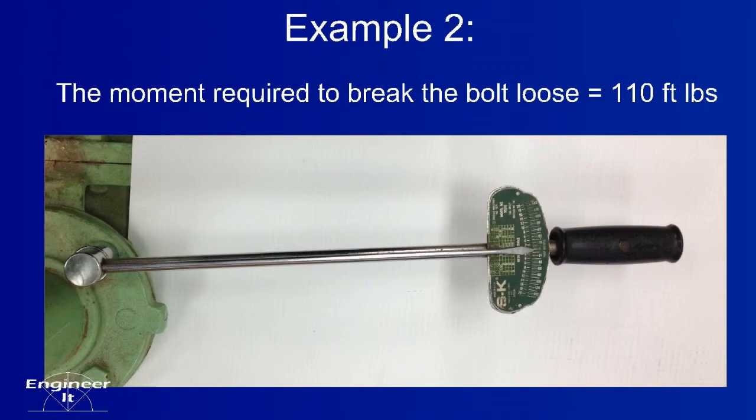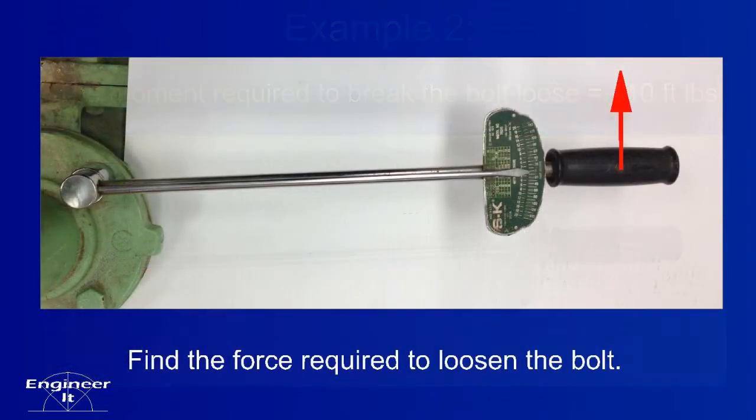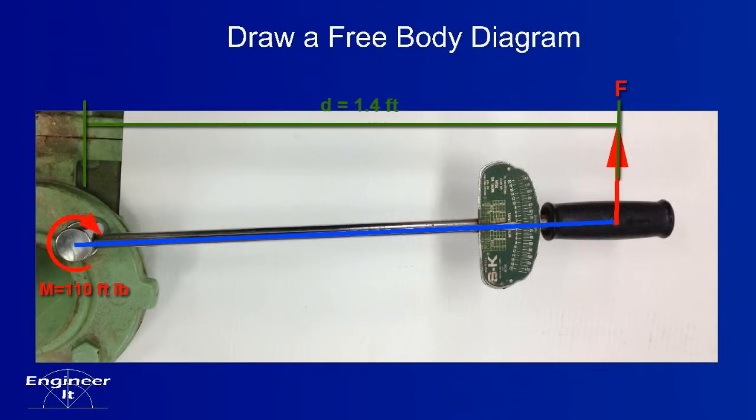Example 2. The moment required to break the bolt loose is equal to 110 foot pounds. Find the force required to loosen the bolt. Once again, start with a free body diagram.